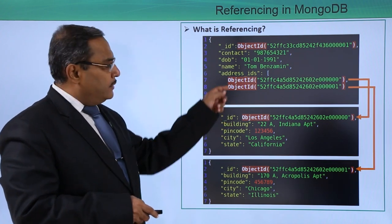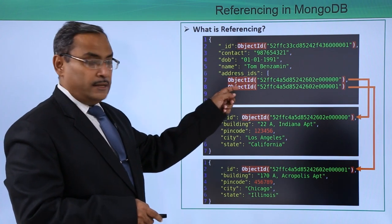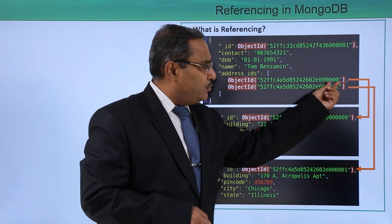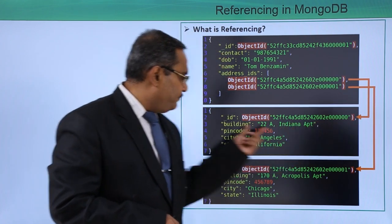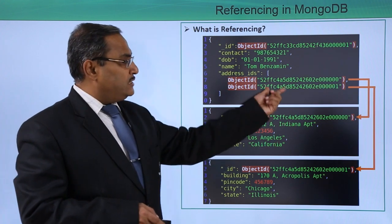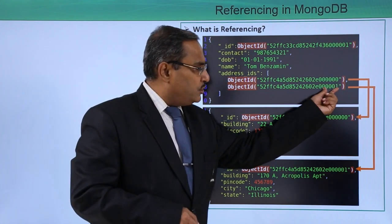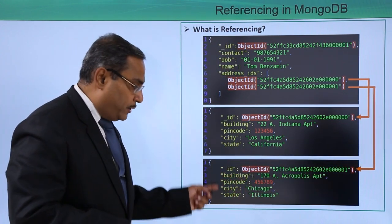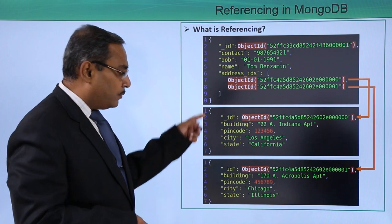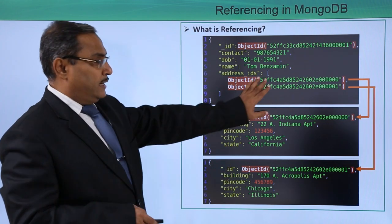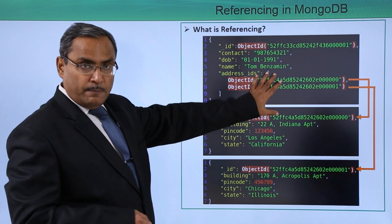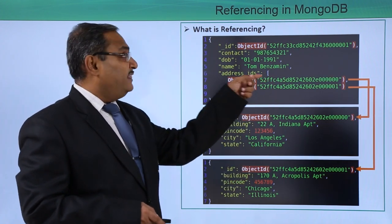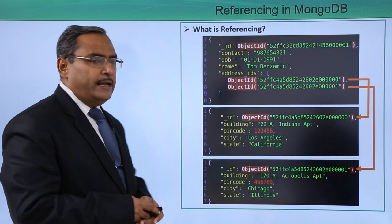This array contains some object IDs. Consider the last four digits — this object ID is actually pointing to another document whose ID matches it. For example, 0001 is referencing that other document. So here we are not embedding them, but using document IDs as links, and that is known as referencing in MongoDB.